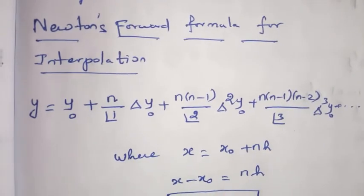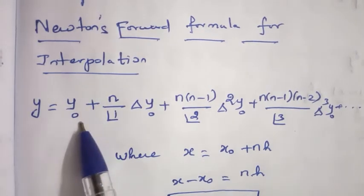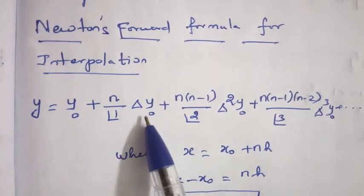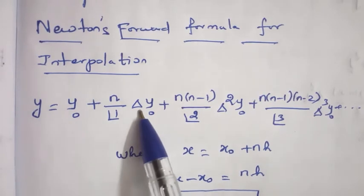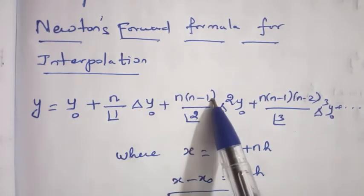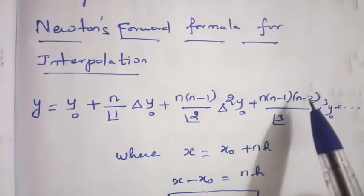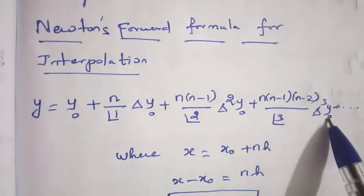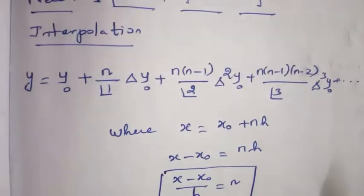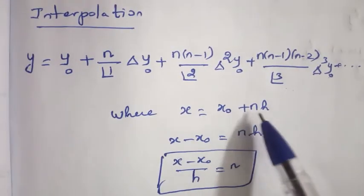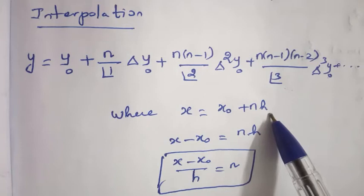It is Newton forward formula for interpolation. Remember this formula: Y equal to Y naught plus N by 1 factorial into del Y naught plus N into N minus 1 by 2 factorial into del square Y naught plus N into N minus 1 into N minus 2 by 3 factorial into del cube Y naught, where X equal to X naught plus N H.